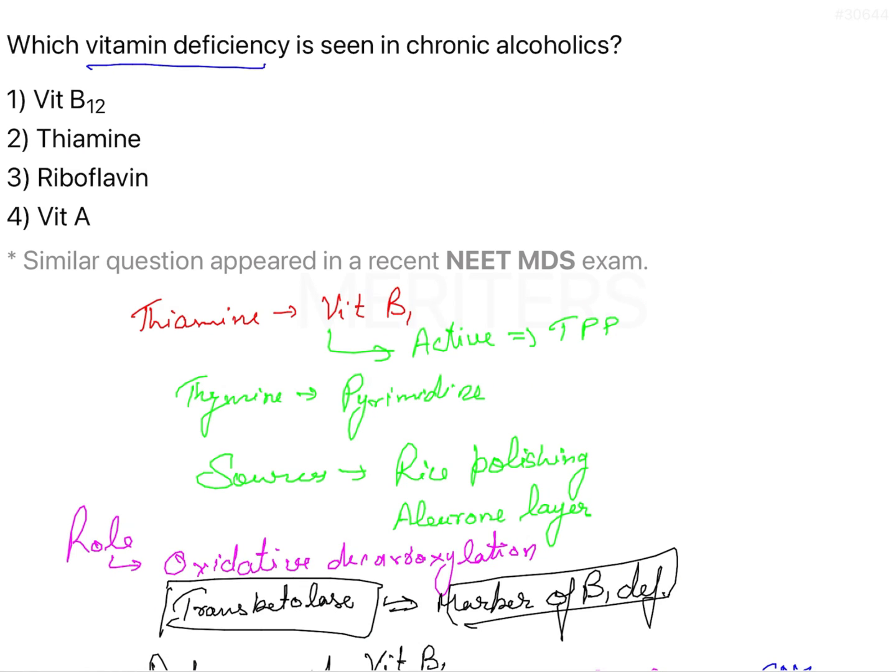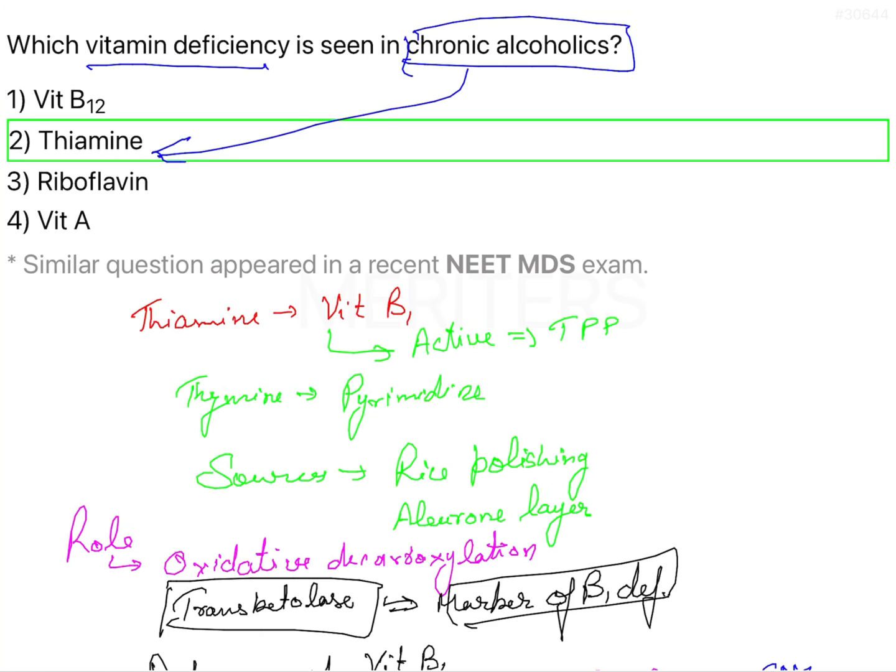These are the various aspects of thiamine deficiency. Coming back to the question: which vitamin deficiency is seen in chronic alcoholics? In chronic alcoholics, you will have thiamine deficiency and you get Wernicke-Korsakoff psychosis, which is a severe case of vitamin B1 deficiency occurring especially in alcoholics. The answer is thiamine deficiency.